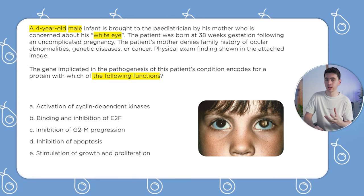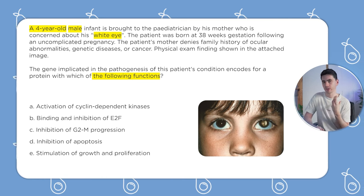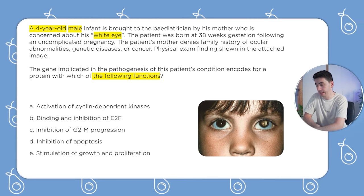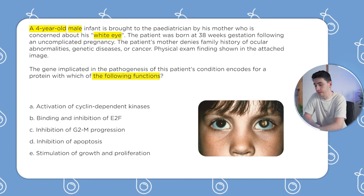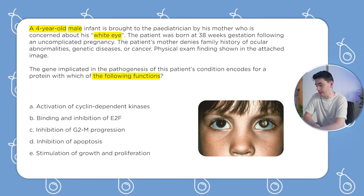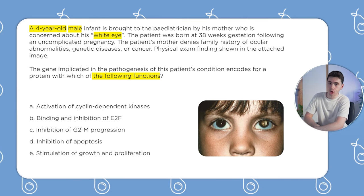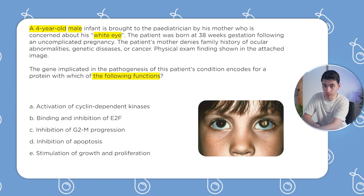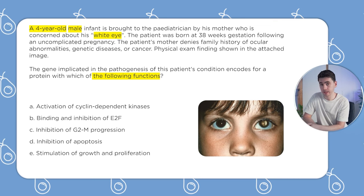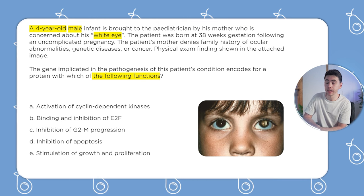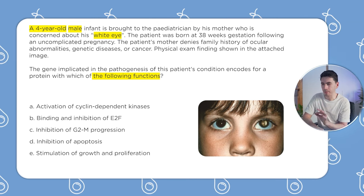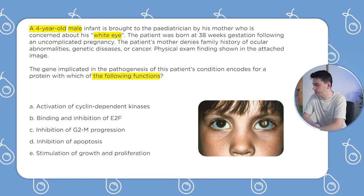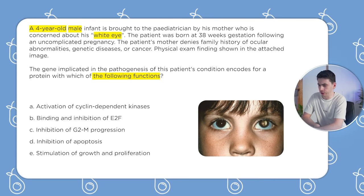Step two is to think to yourself: what concept is this question testing? We're looking for the function of the gene implicated in this patient's condition. The first step is to appreciate the patient's eye and know that the most common cause of a white eye like this, in practice questions, is typically retinoblastoma. If you don't have that knowledge, that's okay — it's quite a common practice scenario on exams. Know that this is retinoblastoma, and the question is talking about a gene, a protein, and the function of that gene.